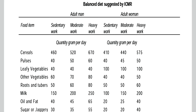When preparing a balanced diet for adult men and women, we have to consider the physical activity of the person. Based on that, we categorize physical activity into sedentary, moderate, and heavy. We have to include different food items like cereals, pulses, leafy vegetables, other vegetables, roots and tubers, milk and milk products, oil and fat, and sugar.